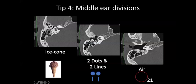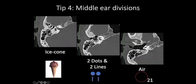In the mesotympanum, what you see is two dots and two lines. In the upper part of the mesotympanum, the handle of the malleus and the long process of the incus look like two dots. A little lower, they are retracted medially and look like two lines. If you don't see anything at all in a normal HRCT — only air — that means you are in the hypotympanum. Remember: ice cone appearance = epitympanum; two dots and two lines = mesotympanum; air only = hypotympanum.